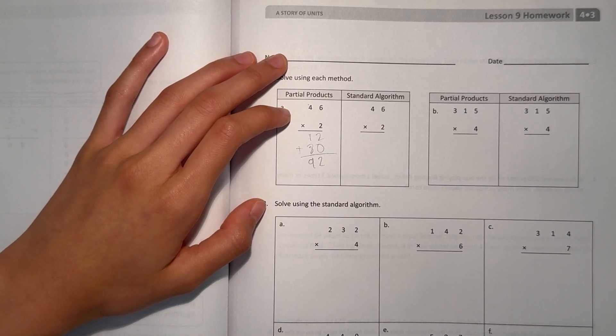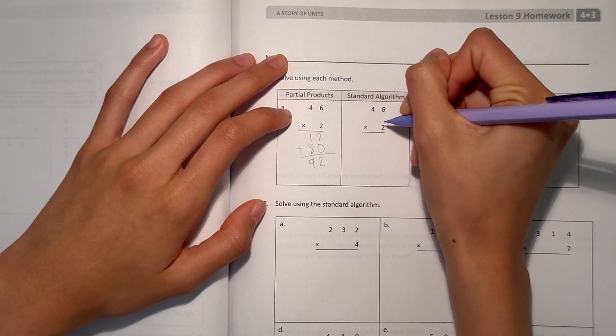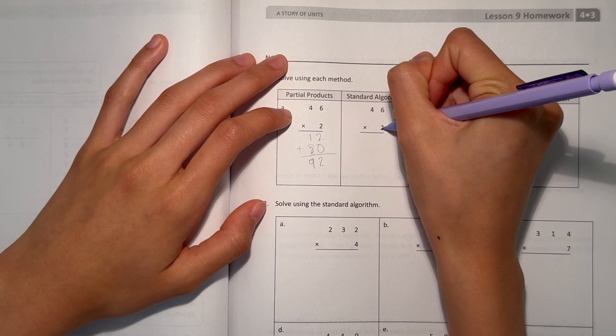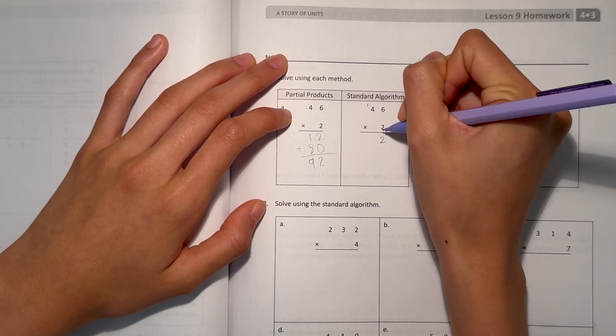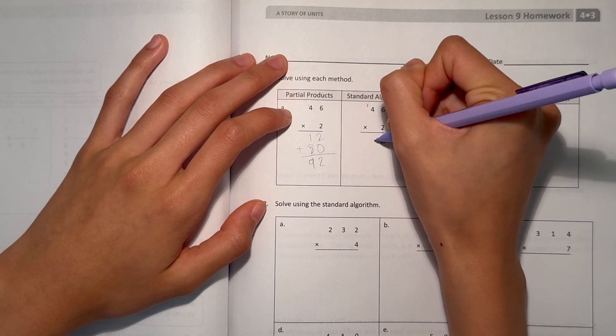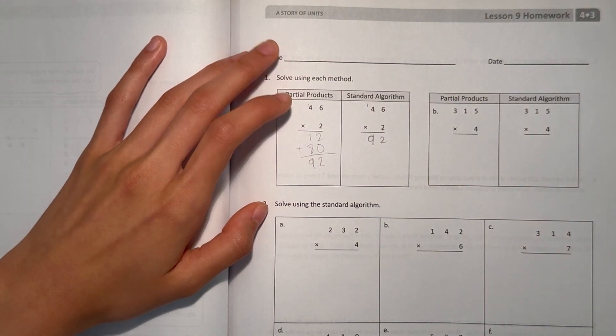But the standard algorithm way, we do 6 times 2, that's 12, so we add a 1 up here. And 4 times 2 is 8, plus the 1 is 9, so our answer is 92 both ways.